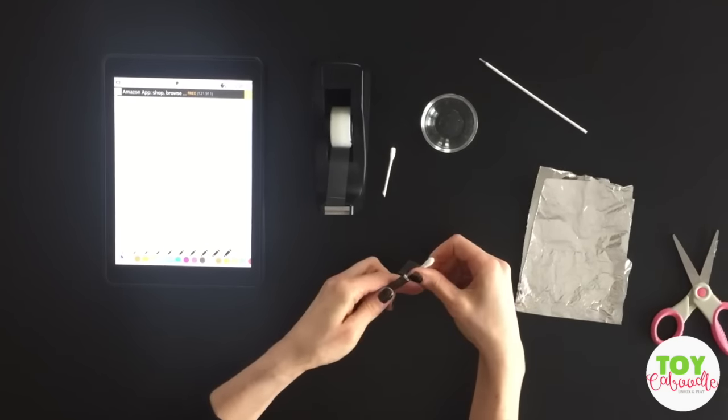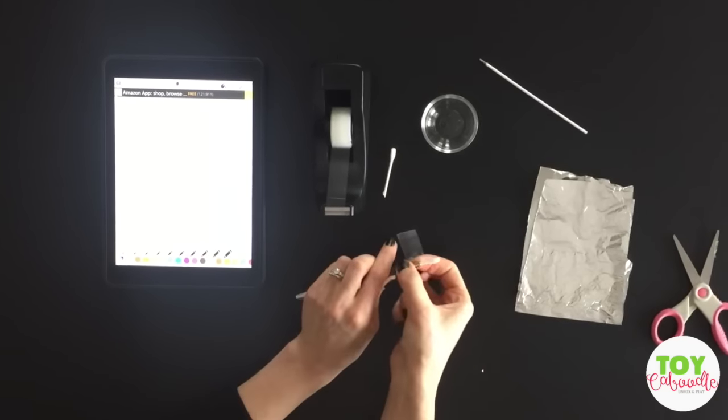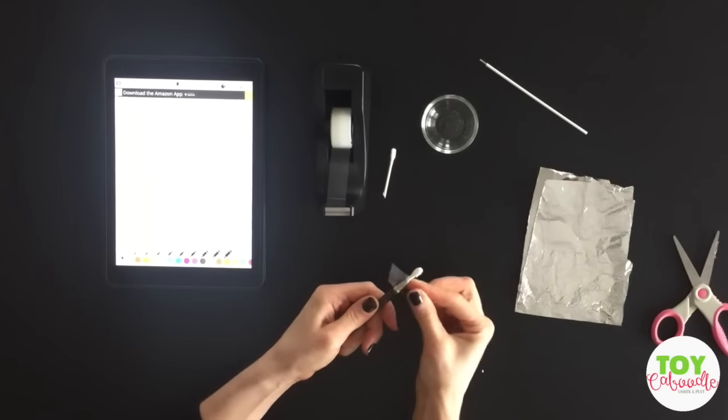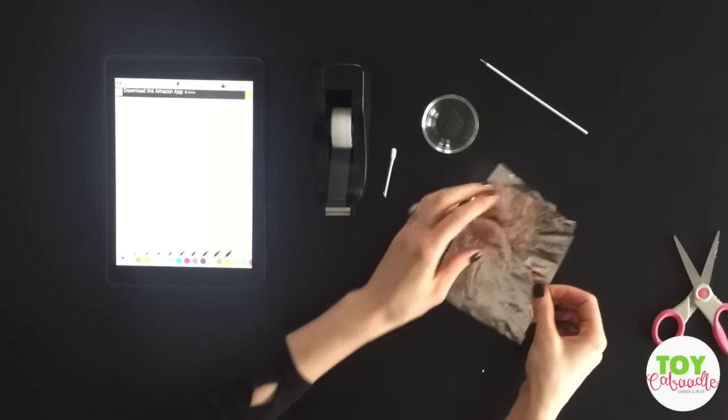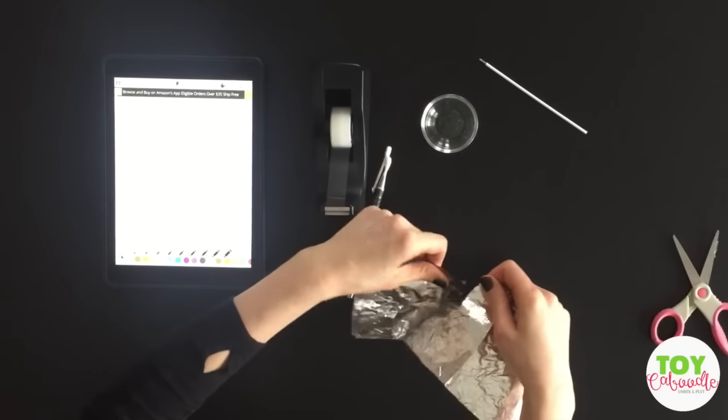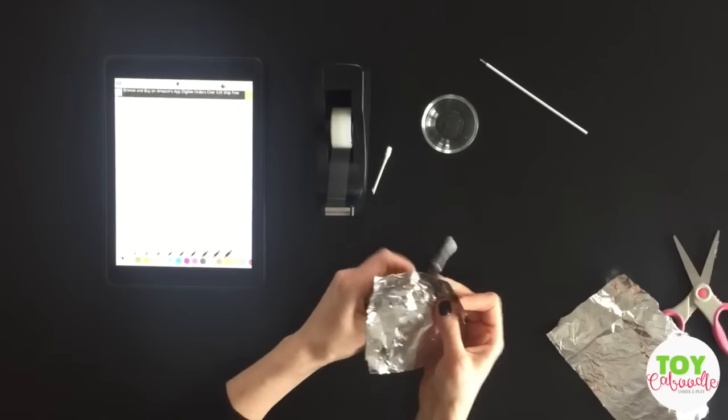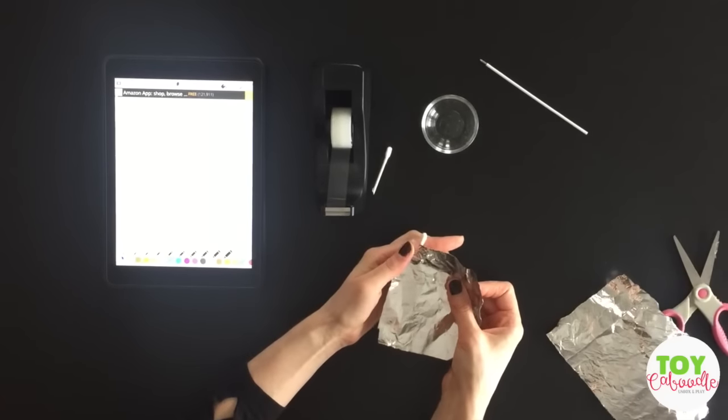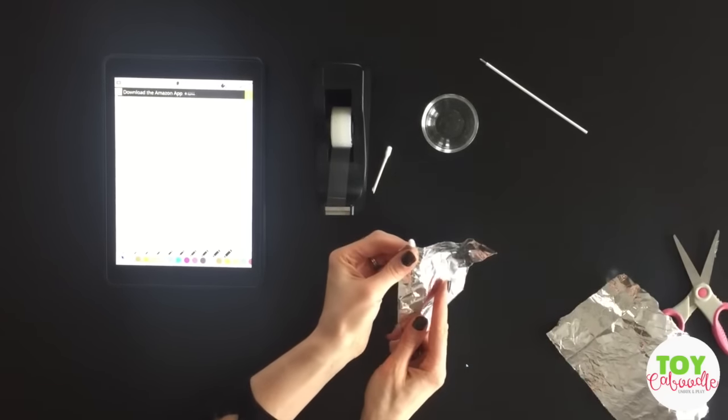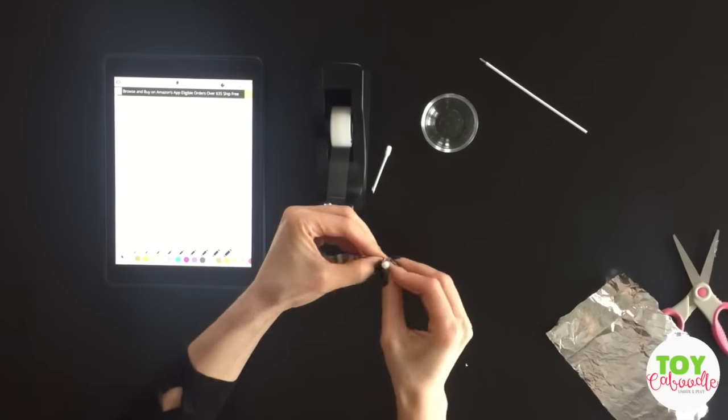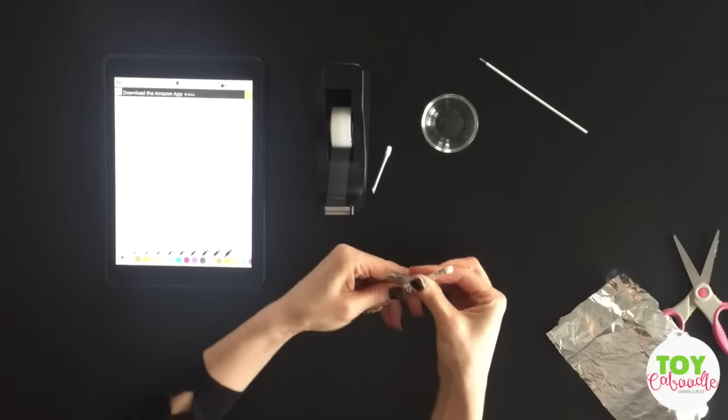What you want to do is take off that part so it doesn't come out. Then you want to grab your aluminum foil and wrap it around the q-tip and the pen, just like that.